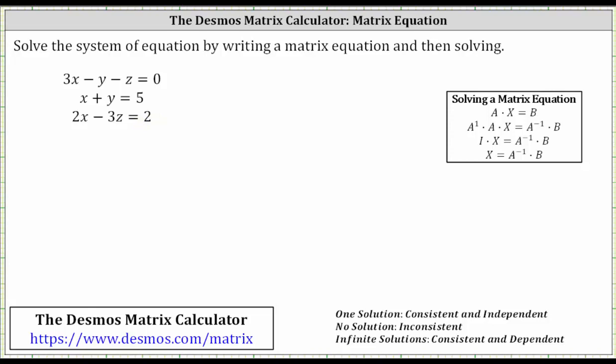Let's rewrite the system of equations so that the coefficients of the x, y, and z terms are more obvious. Let's write the first equation as 3x minus 1y minus 1z equals 0.